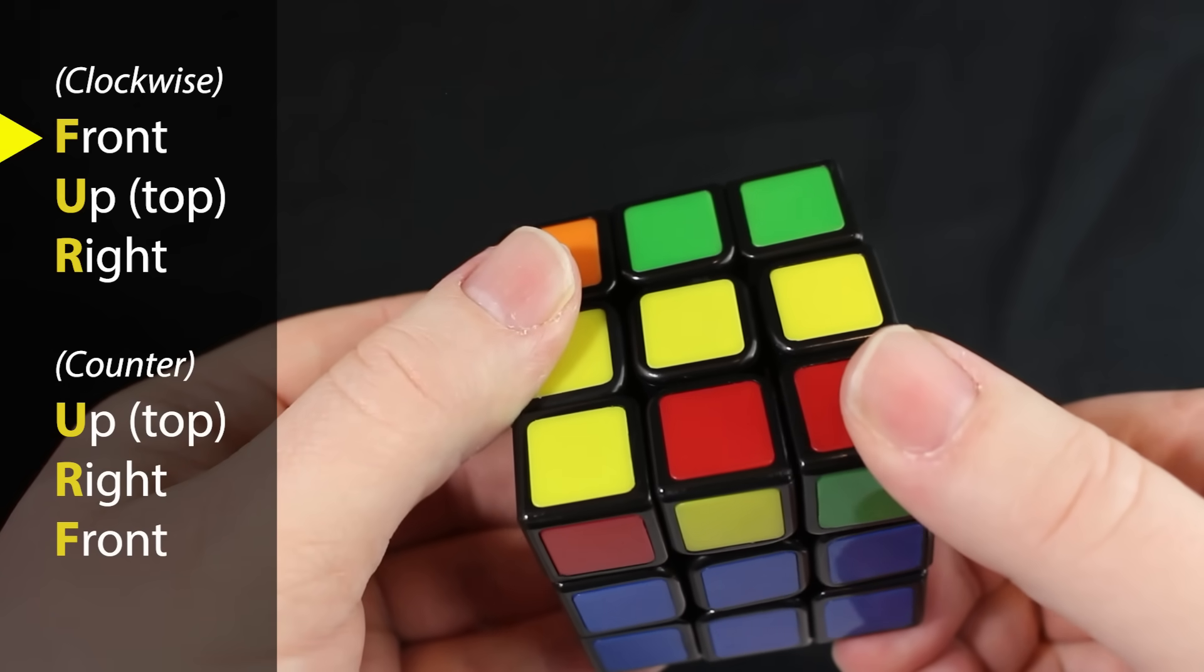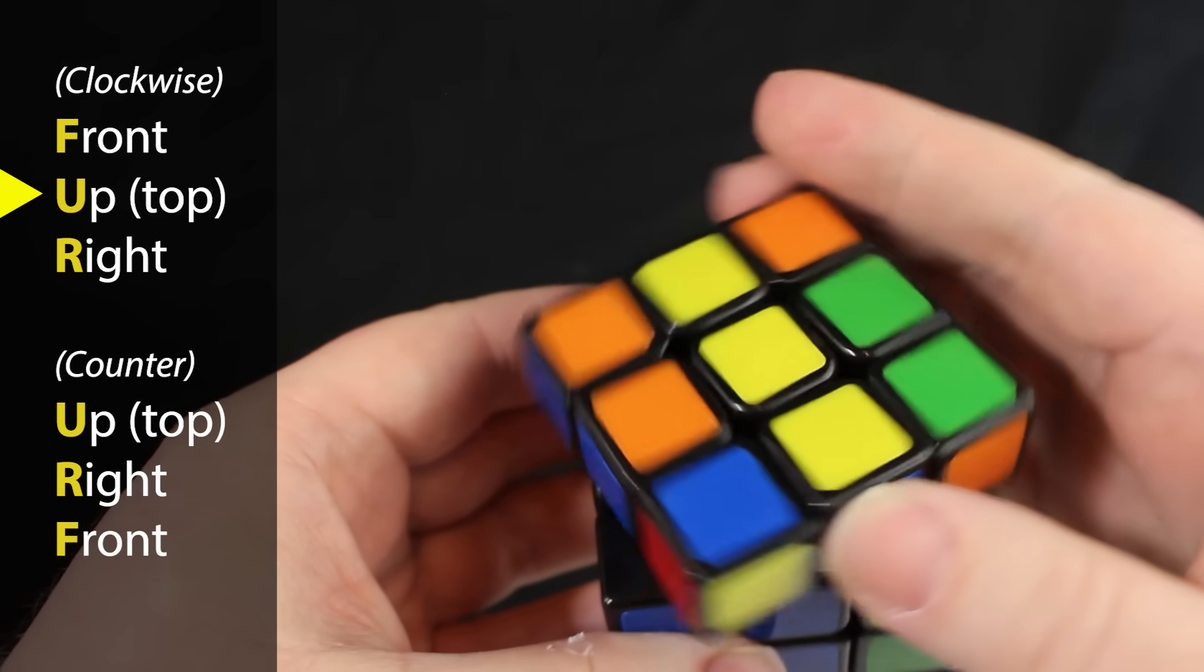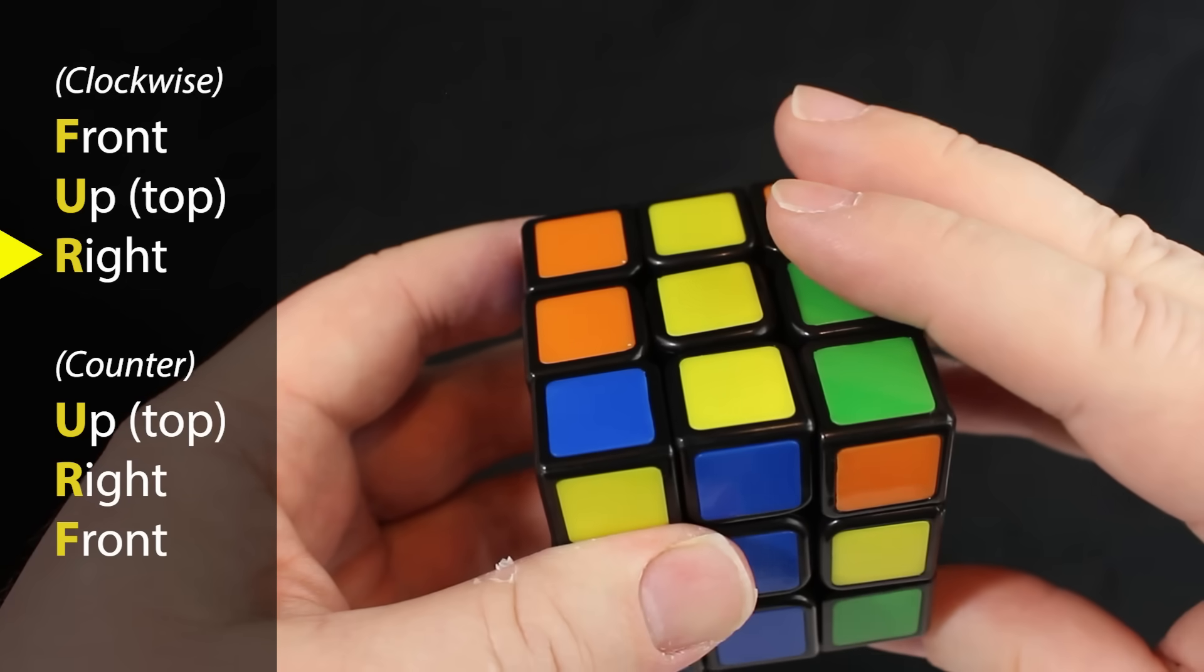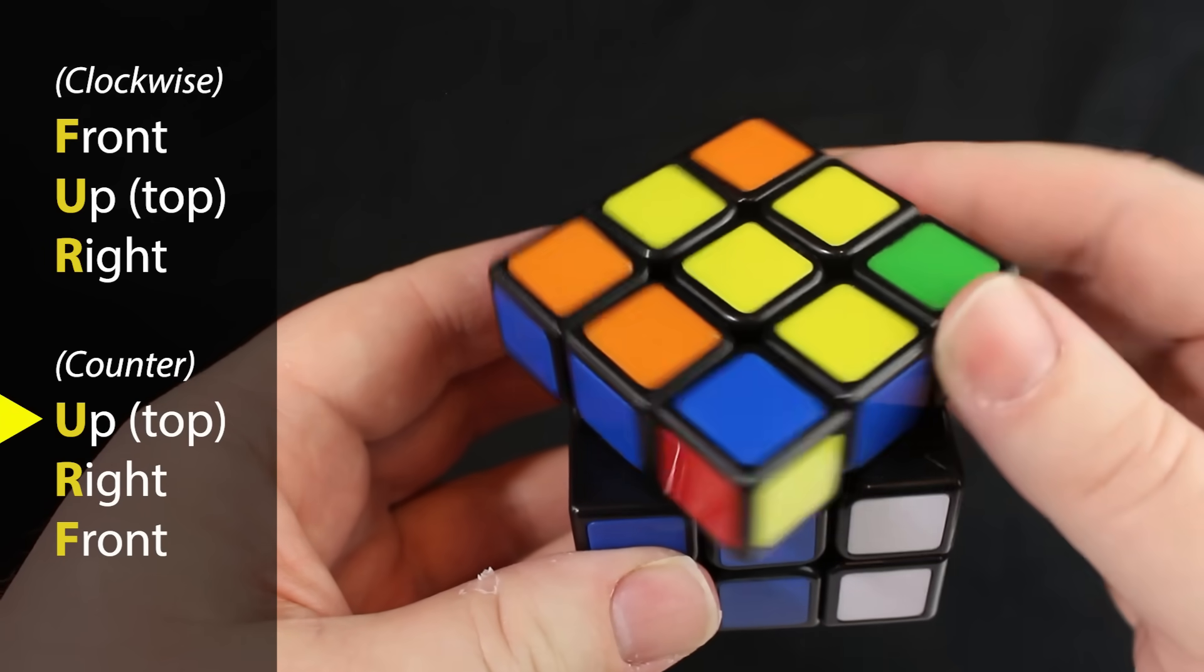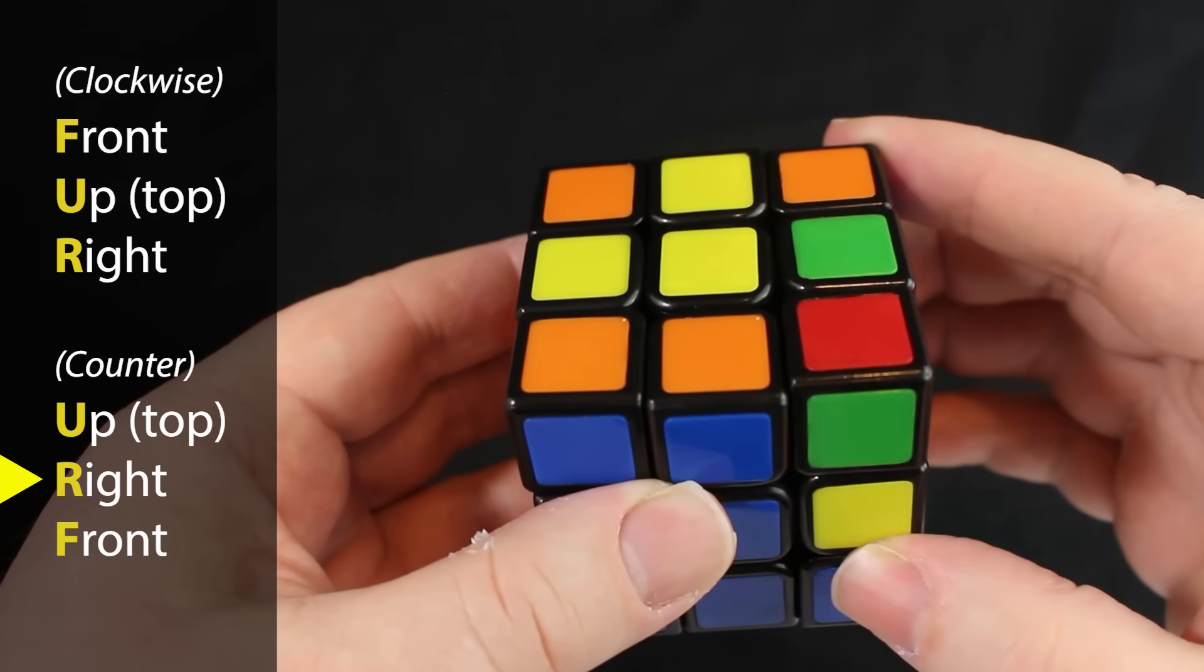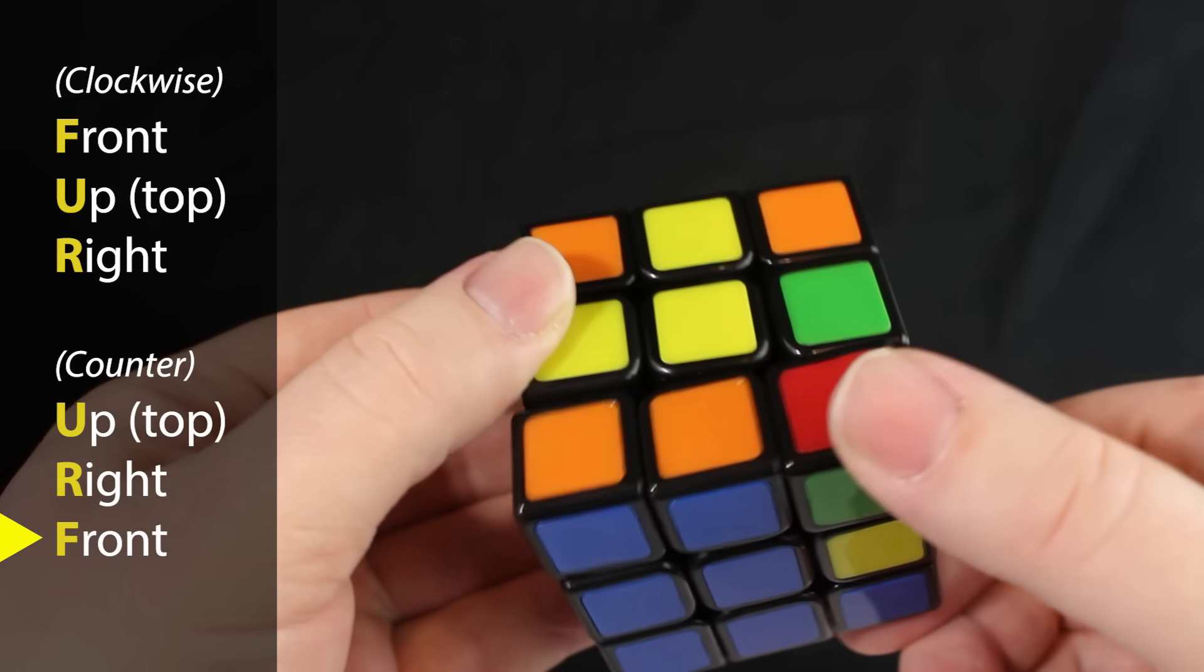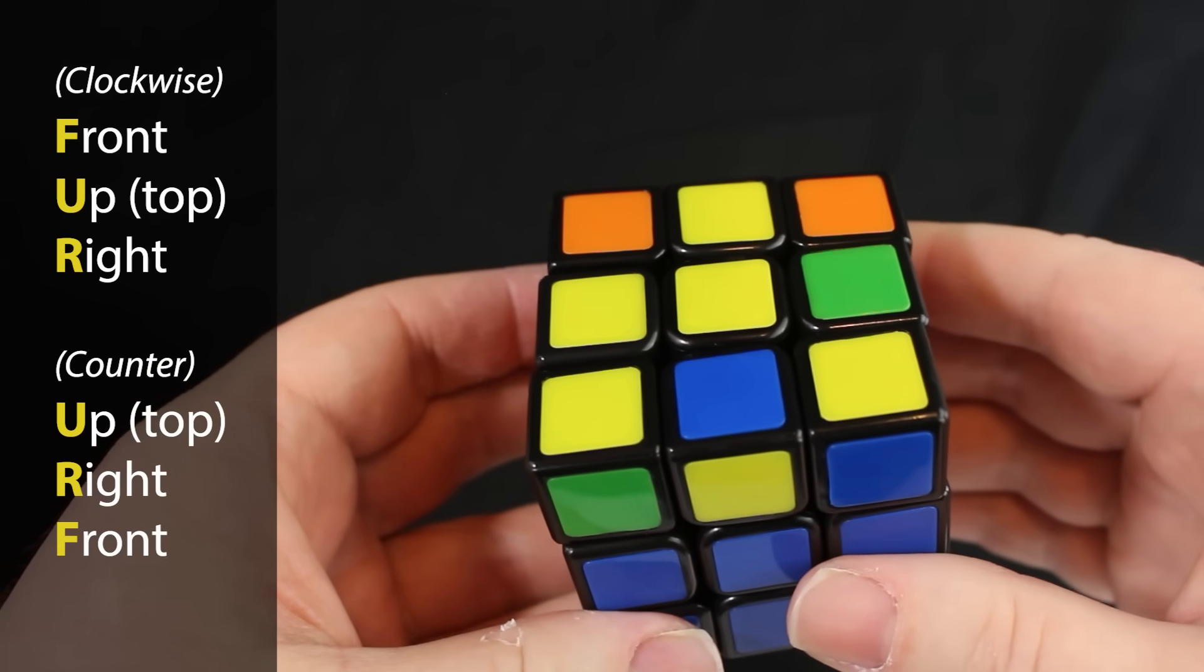So I'm going to do the front of the cube going clockwise, then the top of the cube, and the right side going clockwise. Then we do the counterclockwise moves, which is the top one going counterclockwise, then the right side counter which is back toward you, and then the front counter.